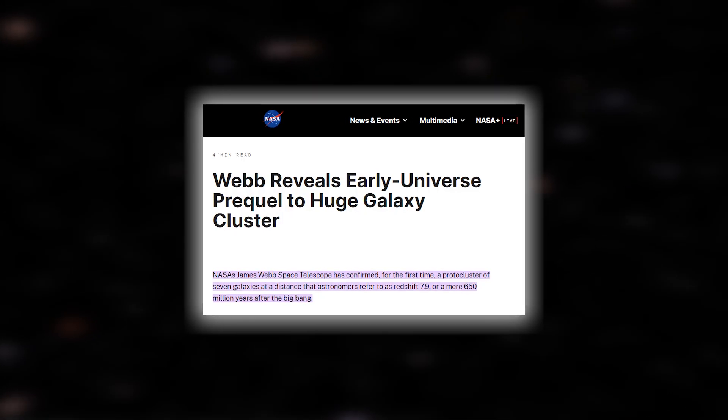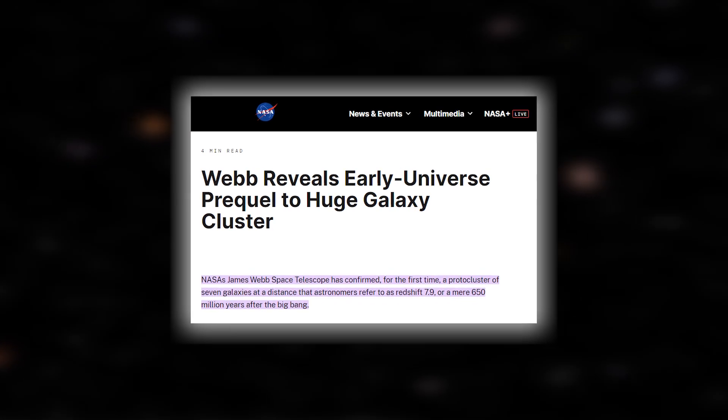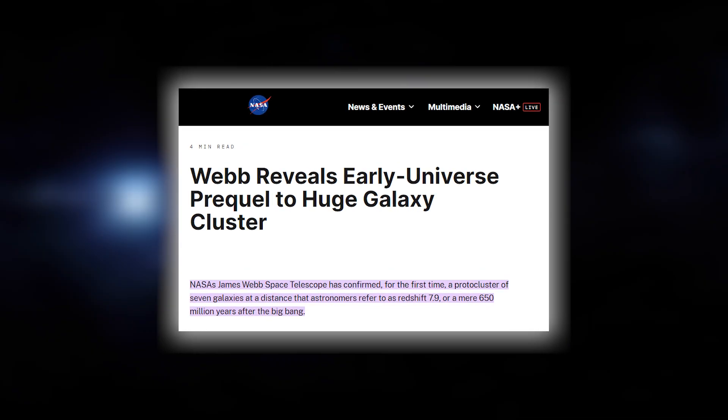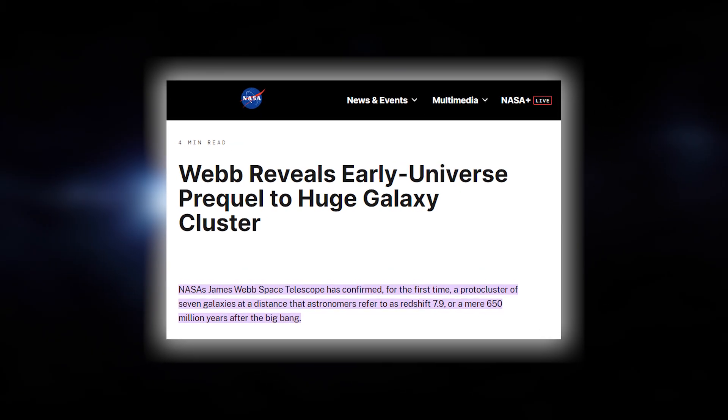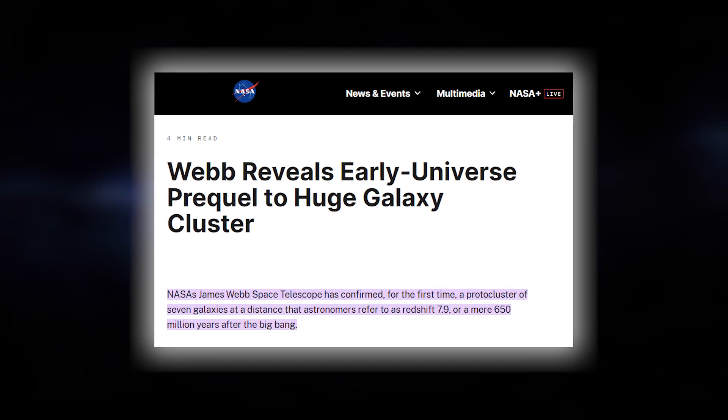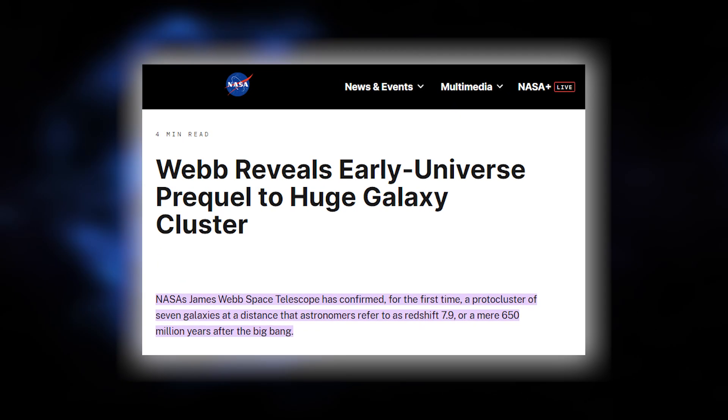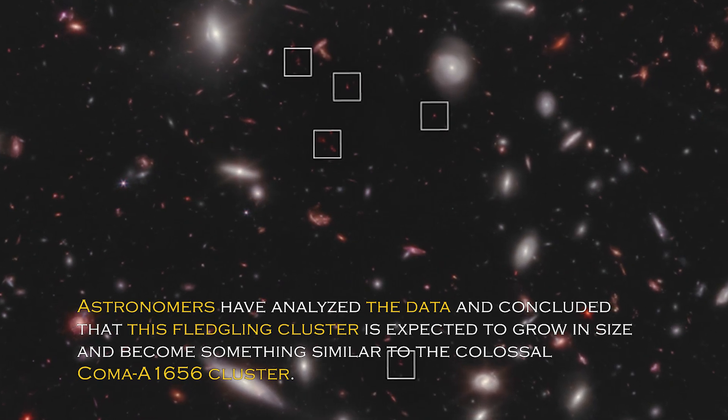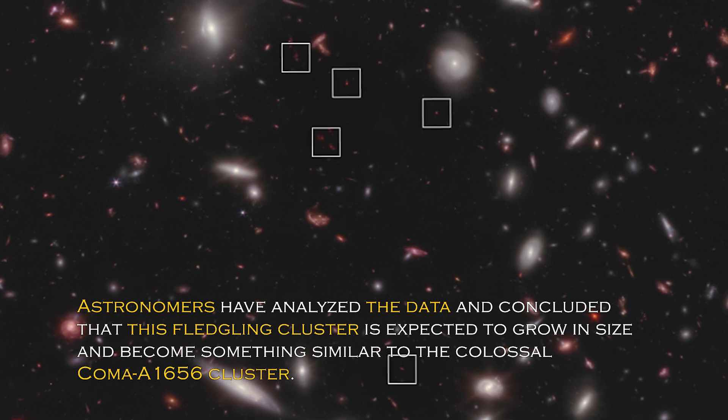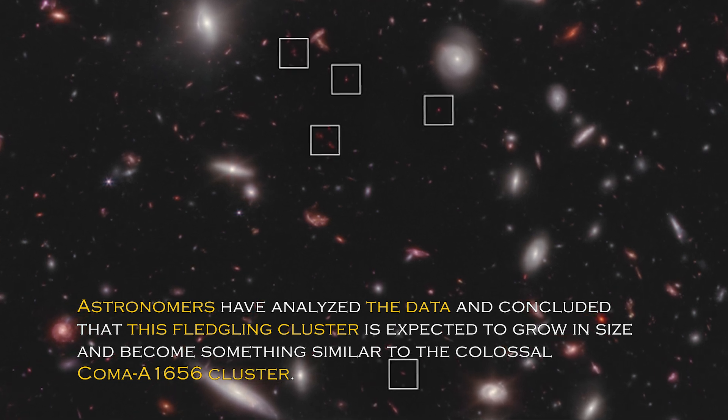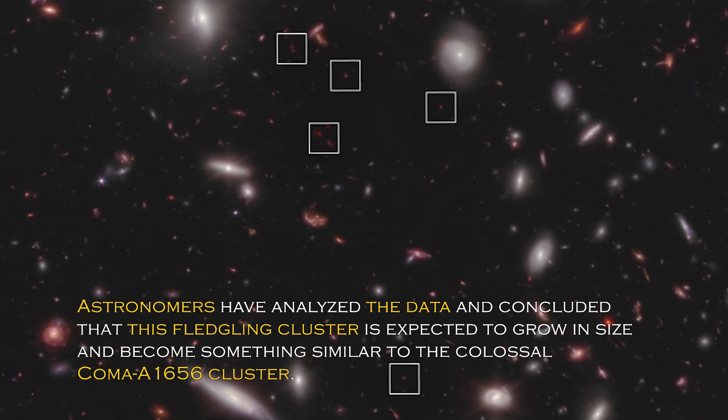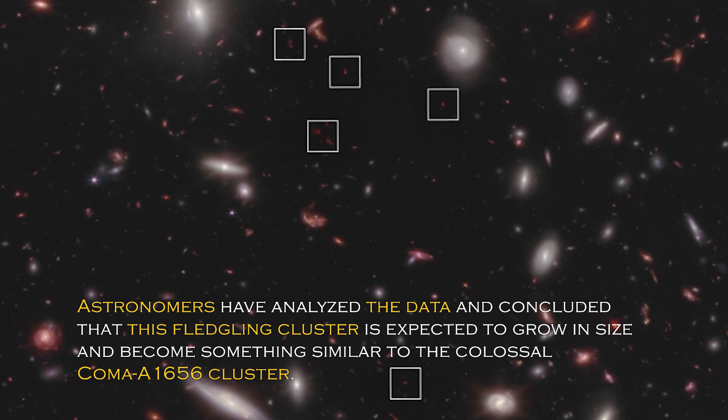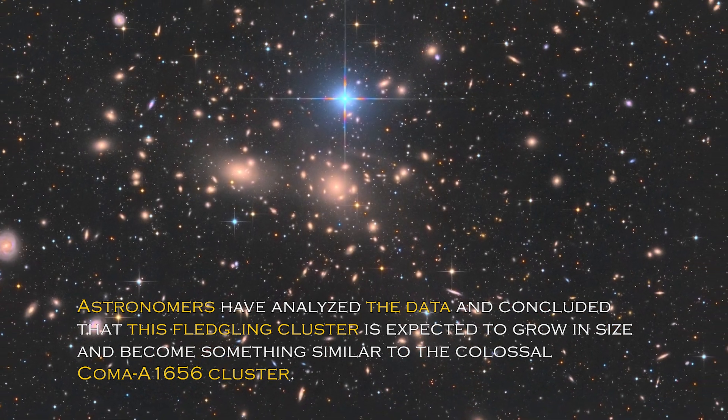Despite this, NASA recently tweeted about a galaxy cluster that lies just 650 million years after the Big Bang, adding another intriguing piece to the puzzle. Astronomers have analyzed the data and concluded that this fledgling cluster is expected to grow in size and become something similar to the colossal Coma A1656 cluster.